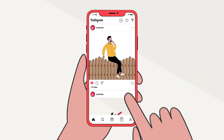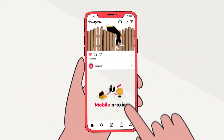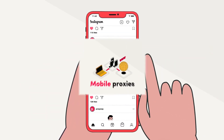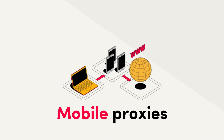Instagram automation experts agree that the best type would be mobile proxies, also called 4G proxies. However, it's the most expensive option.